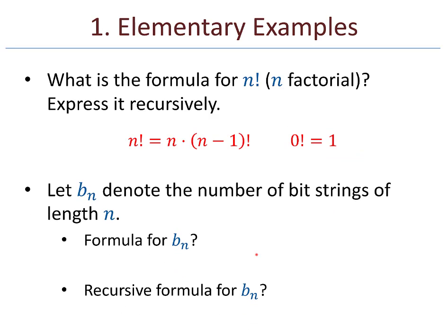Here's another example. Let b_n denote the number of bit strings of length n. What's the formula for b_n? We can do this directly. I have n blanks to fill, and these get filled with either 0s or 1s. At every blank, I have two choices. So, my formula is 2 to the n.